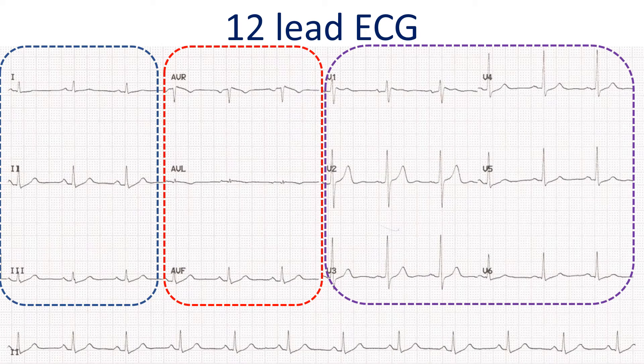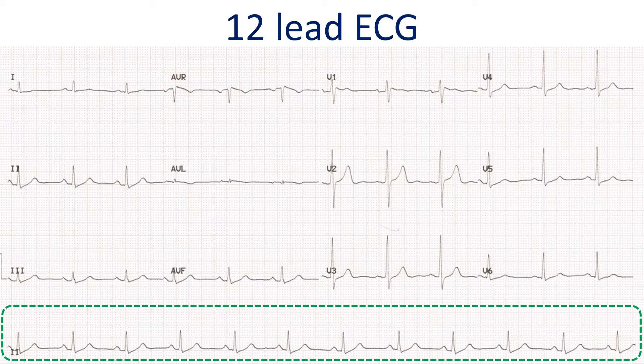The most commonly recorded ECG is a 12-lead ECG. The 12 leads in a standard ECG are as follows: Standard Limb Leads 1, 2, 3; Augmented Limb Leads AVR, AVL, AVF; and Chest Leads V1, V2, V3, V4, V5, V6. A standard 12-lead ECG does not include right chest leads known as V3R, V4R, V5R, etc.